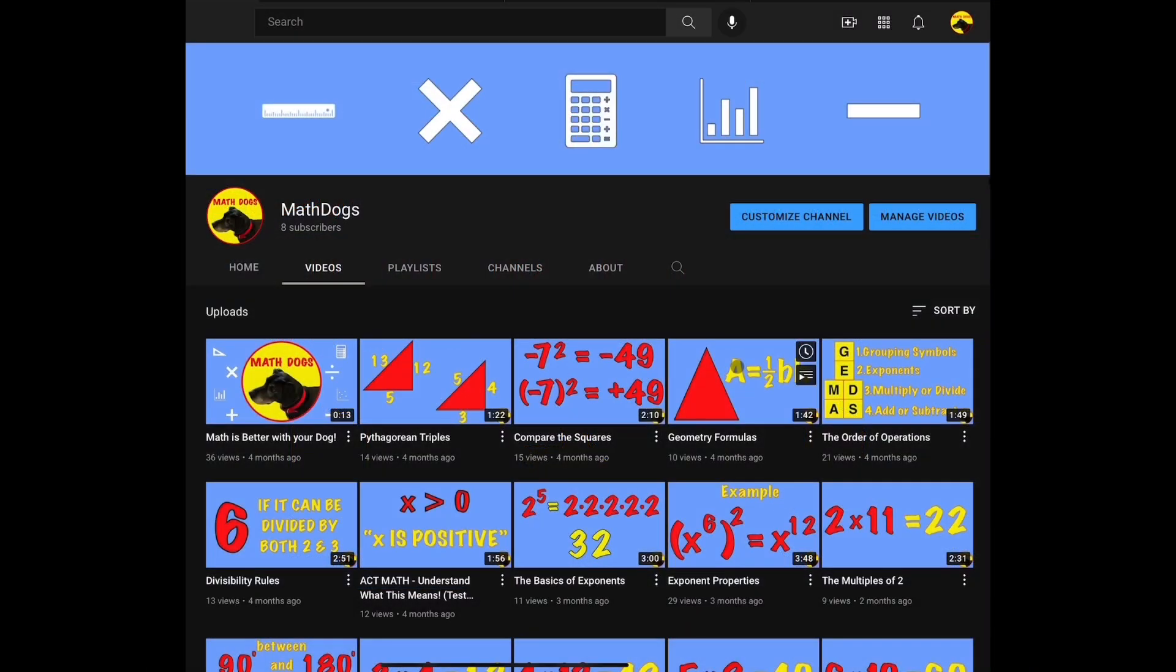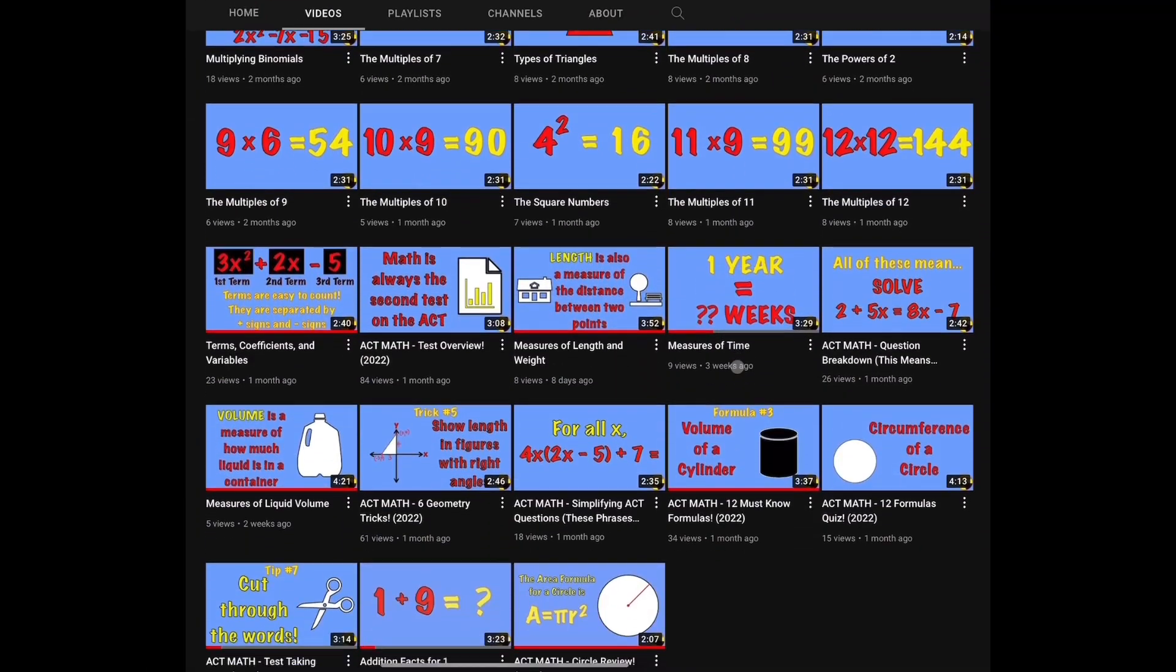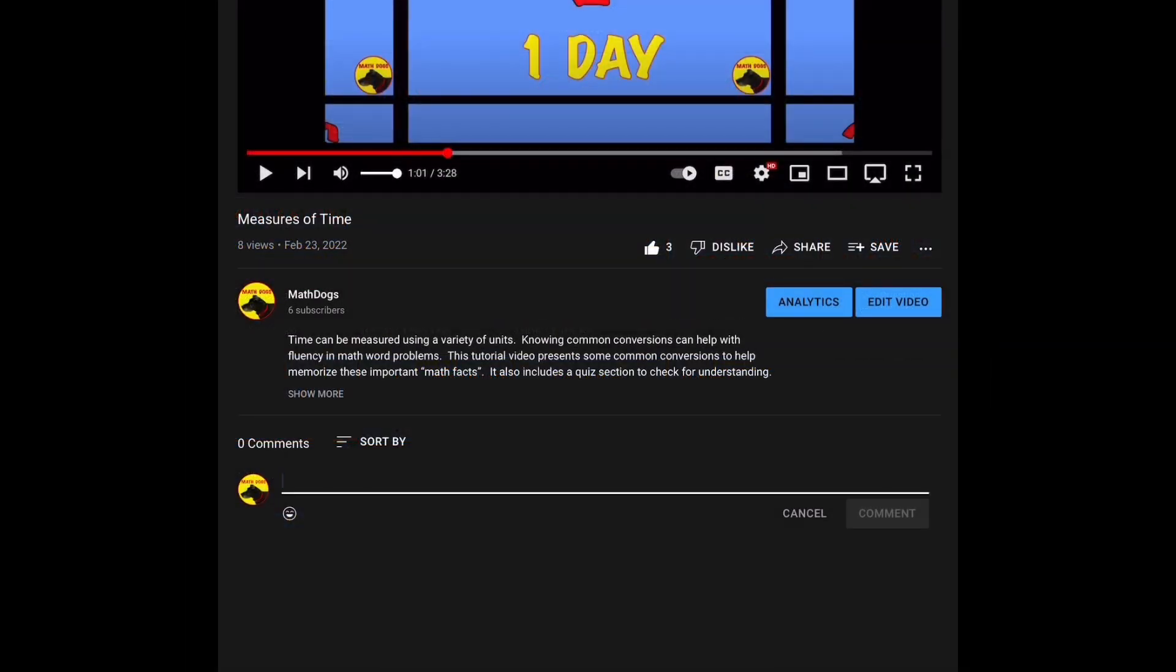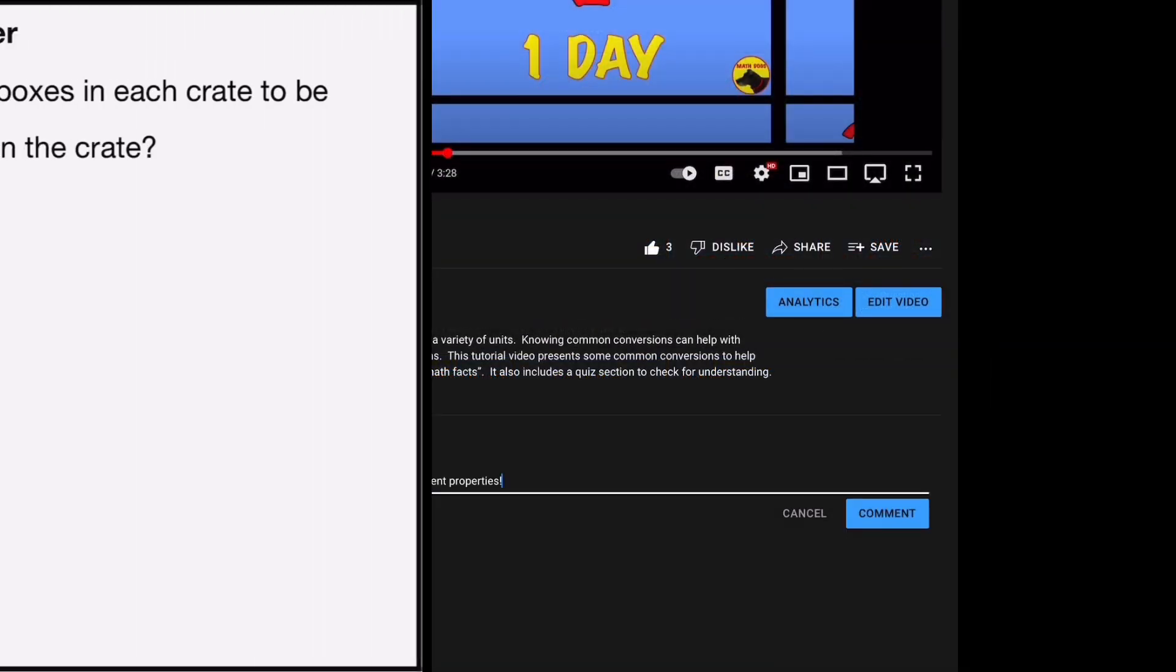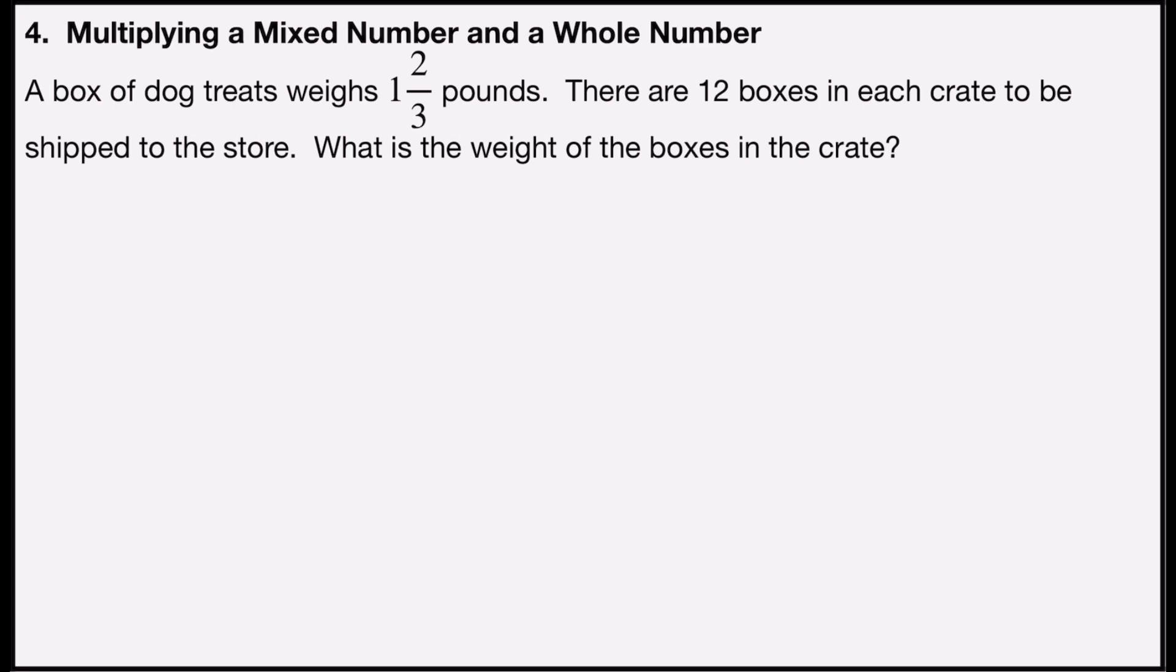Welcome back to Math Dogs. If you're new to the channel, please comment, like, and subscribe. If you have any questions, please comment down below. Problem number four is multiplying a mixed number and a whole number.